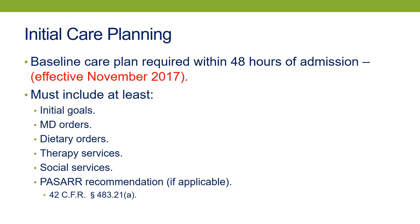Recall that phase one regulations are already in effect and don't reflect significant changes from previous requirements. Baseline care planning is something that wasn't required before, so that requirement won't come into effect until November of this year. But facilities would be well advised to start doing that as early as possible — there's no particular reason to wait 12 months, and it's certainly good practice to have a functioning care plan whenever a resident is in the facility. The regulatory requirements are focused on the basics: the goals and the various orders relevant to the resident's care.